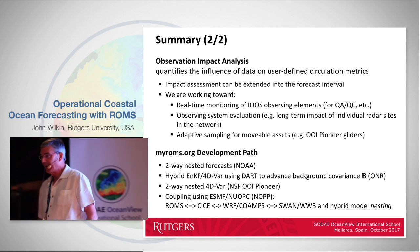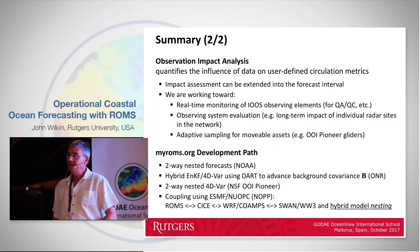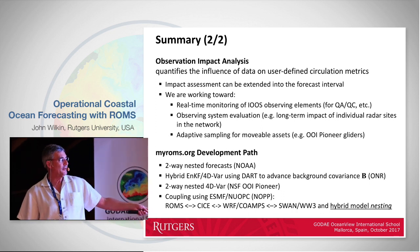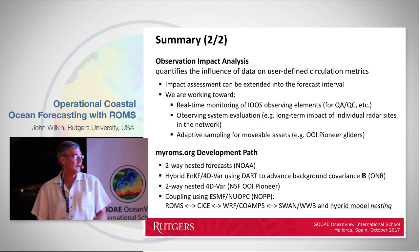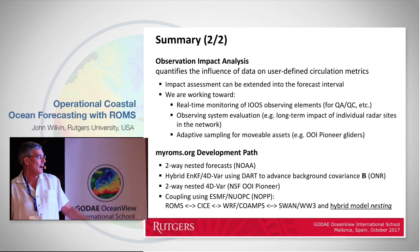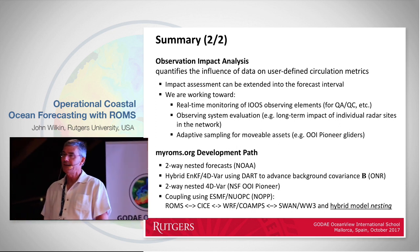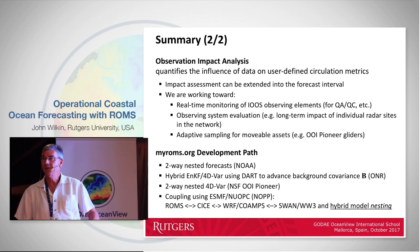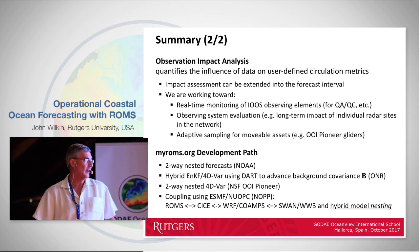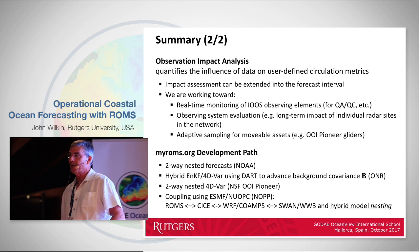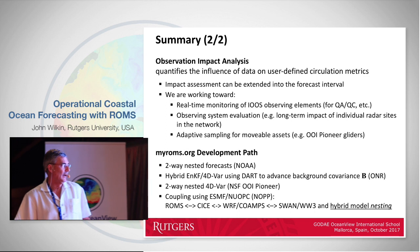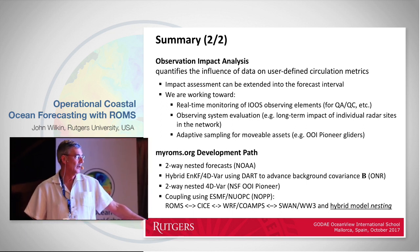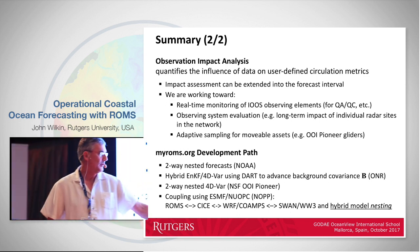Just a few comments on a development path for ROMS: we're working on two-way nesting in the forecast for our MARACOOS system. Andrew Moore and Hernan Arango are working on a hybrid ensemble Kalman filter / 4D-Var using the DART machinery — that's an ONR project. We're also doing two-way nested 4D-Var with nesting inside the adjoint and tangent linear, for the Pioneer Array. On biogeochemical modeling, we have some experience writing an adjoint of an NPZD ecosystem model, and I think the better way would be to assimilate inherent optical properties. We've also coupled ROMS to the Los Alamos sea ice model, the Navy's COAMPS atmospheric model, SWAN, and are working on WaveWatch 3.